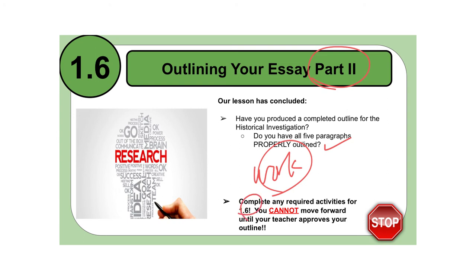So work on 1.6. You cannot move forward until your outline has been approved. This stop sign really actually does mean something. You cannot go on to 1.7 until you have completed and I have approved your outline for 1.6. So get that done, get it approved so you can move on to 1.7. Thanks so much for your attention. Have a great day.